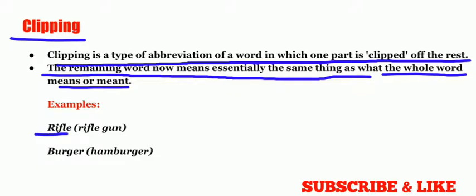The remaining word means essentially the same thing as what the whole word meant. For example, rifle. The full name of this weapon was rifle gun, but now gun is clipped from the word and only rifle remains, but the meaning remains the same. The next one is burger. The full name was hamburger, but ham is clipped and burger remains with the same meaning.